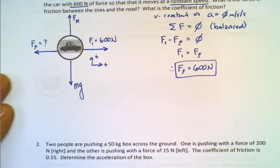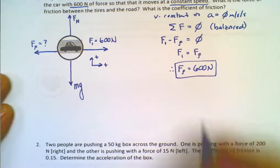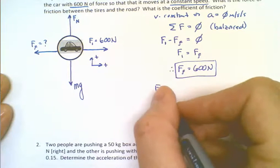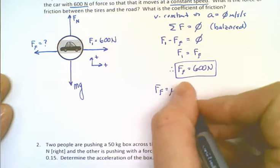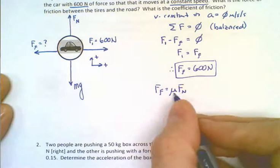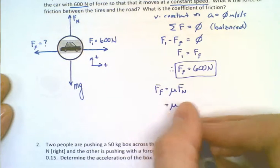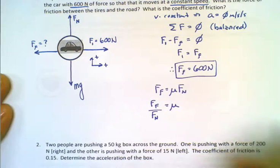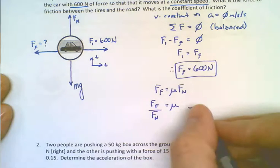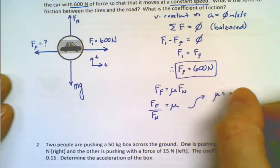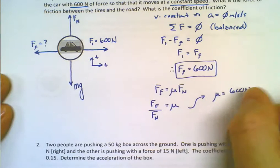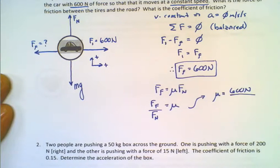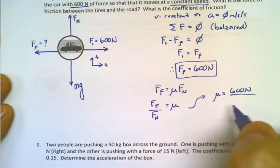All right, well, it says, what is the coefficient of friction? Well, here's where we use the fun equation. And if we're trying to find the coefficient of friction, that's mu. It's the frictional force divided by the normal force. Well, the frictional force we just found was 600 newtons. Okay, well, it turns out that we need that normal force after all.